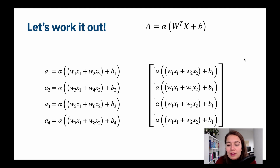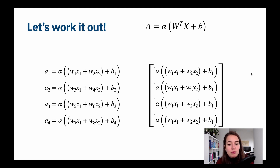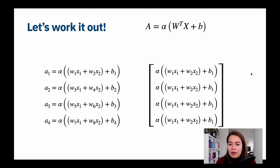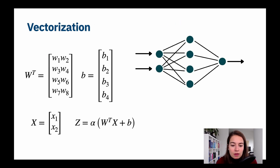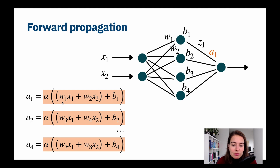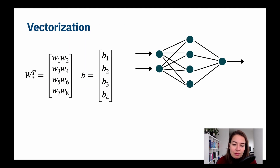This is important to know because it shows you how everything works in a neural network — we don't do calculations one by one, we do them in a vectorized way. When studying this outside of this course, you'll probably also see it calculated in vector form. Note the notation difference: small letters signify a single number (one weight, one value), whereas capital letters signify a matrix.